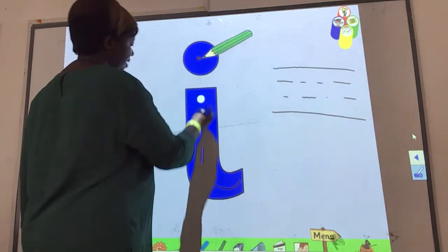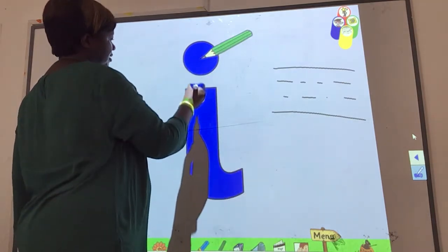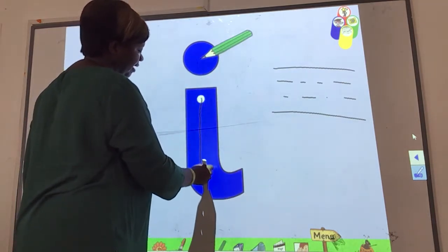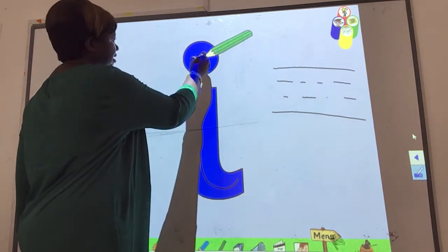Let's do it one more time. Let's go. Stand in line, make a small tail and a dot.